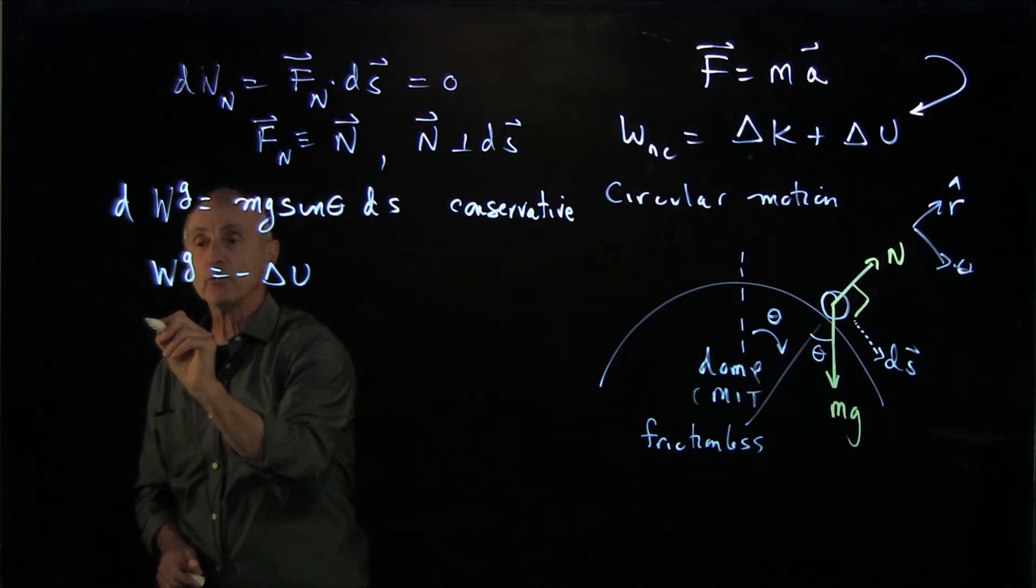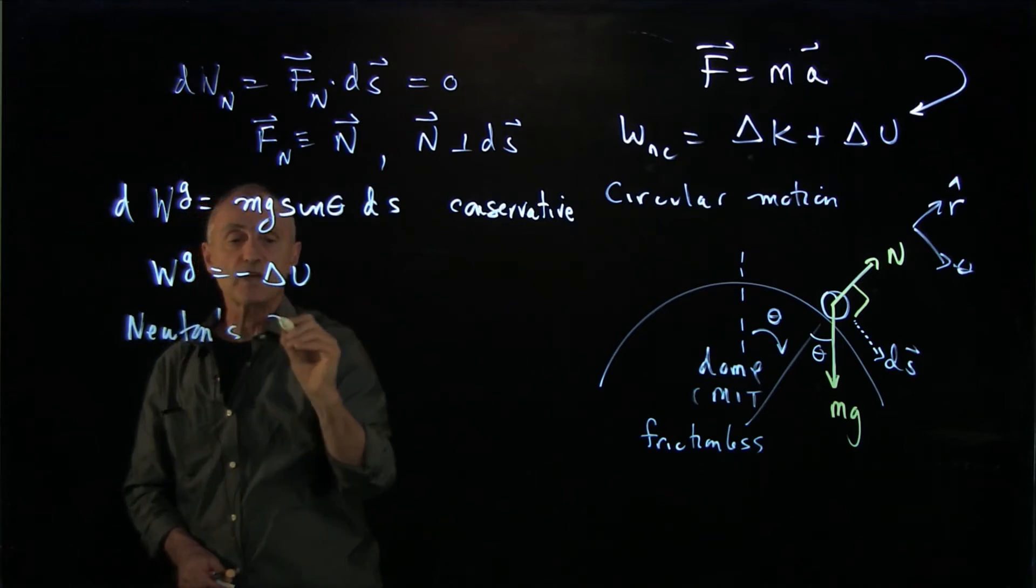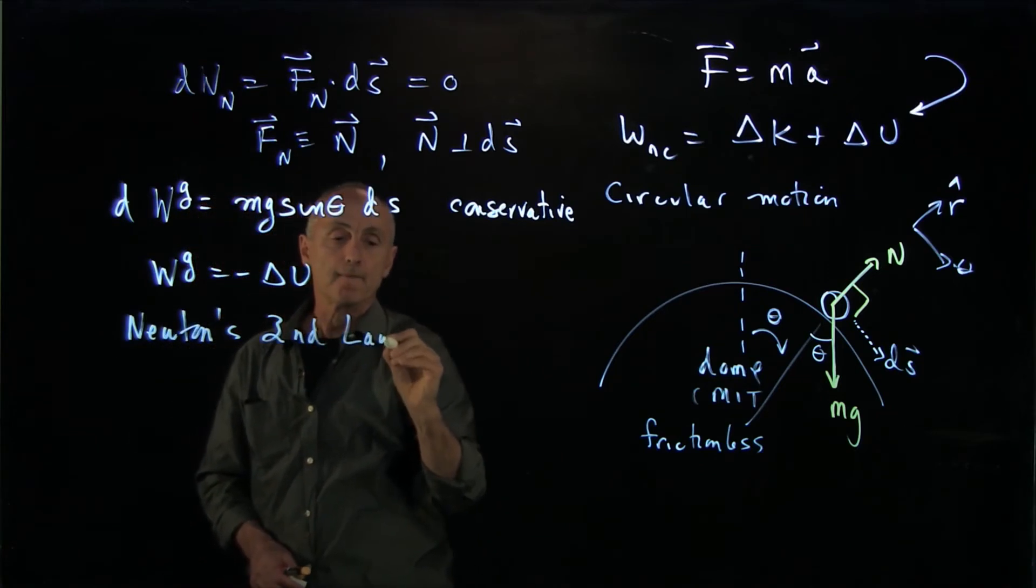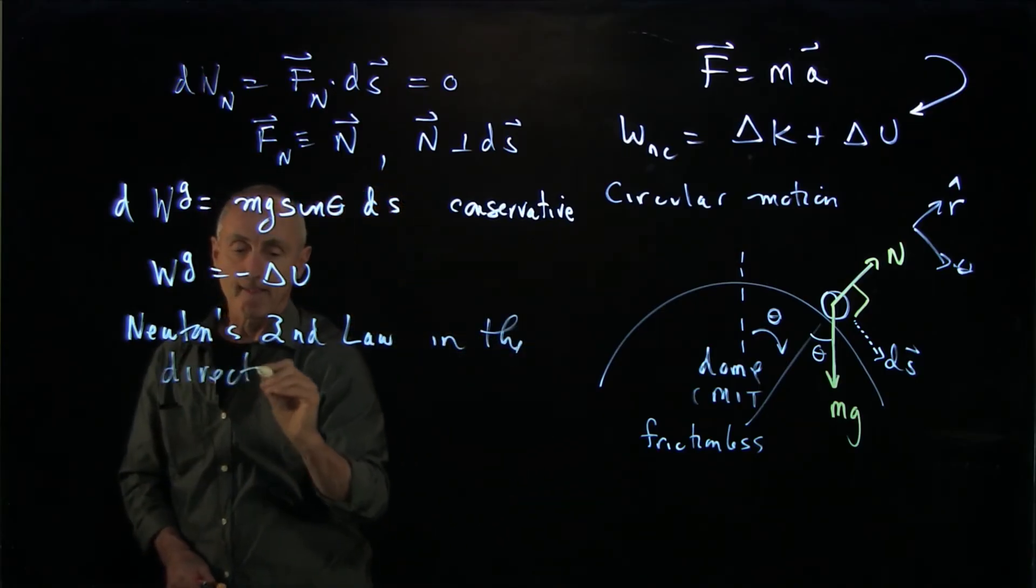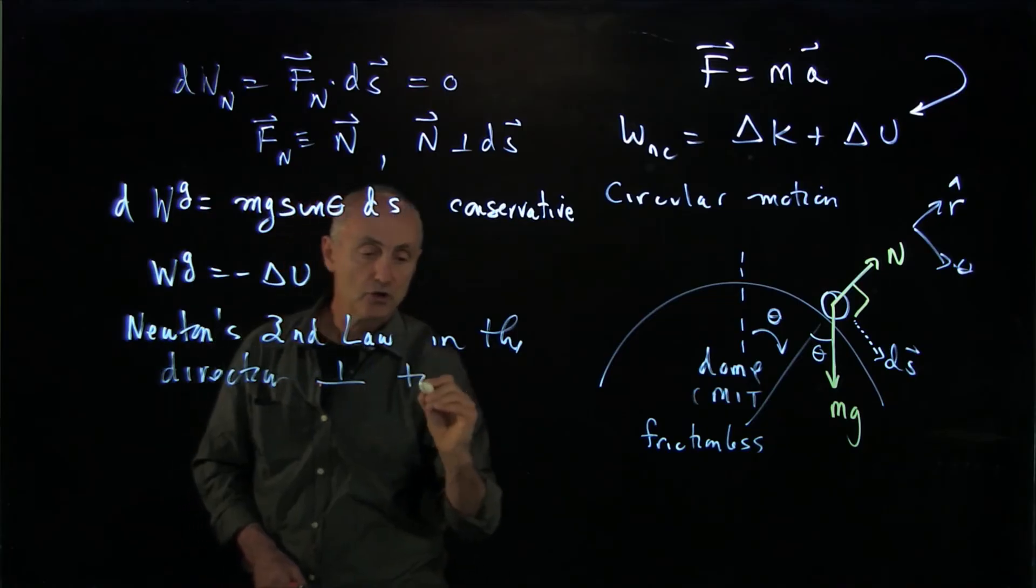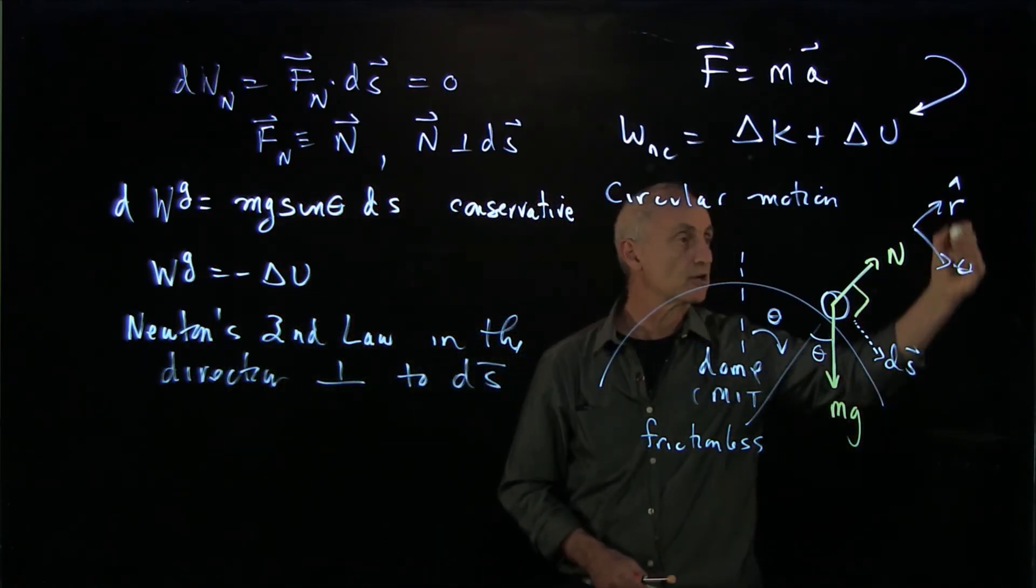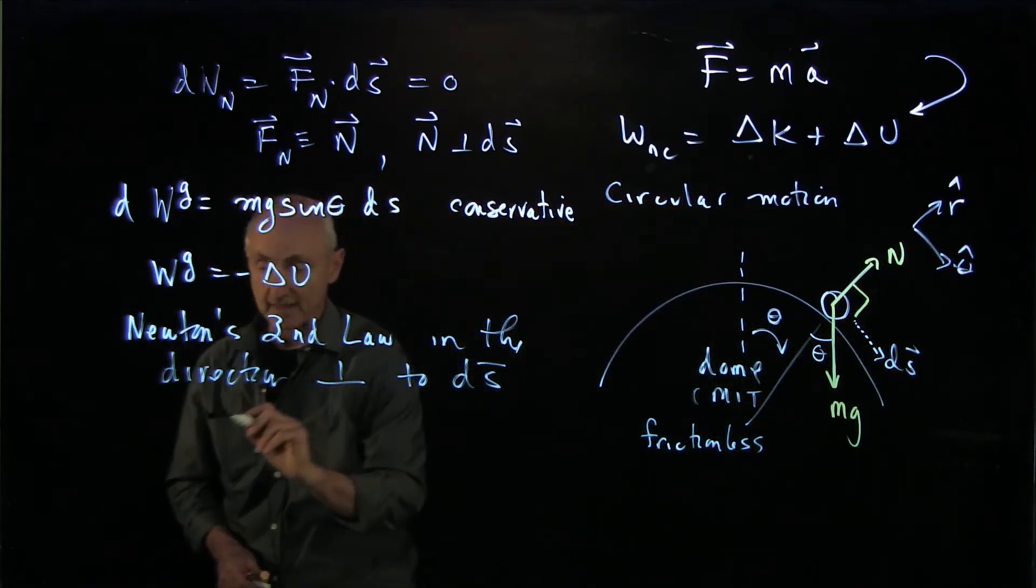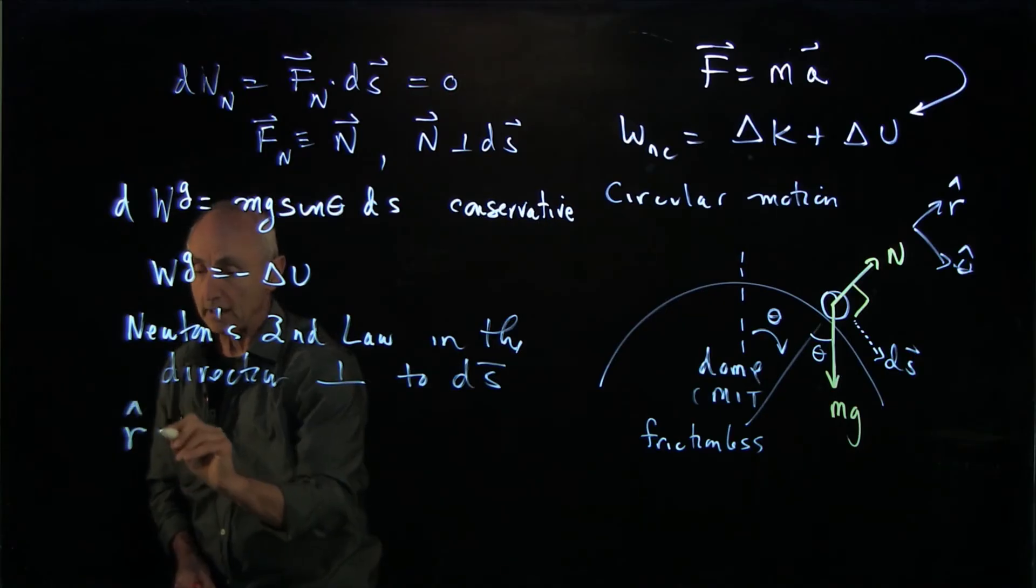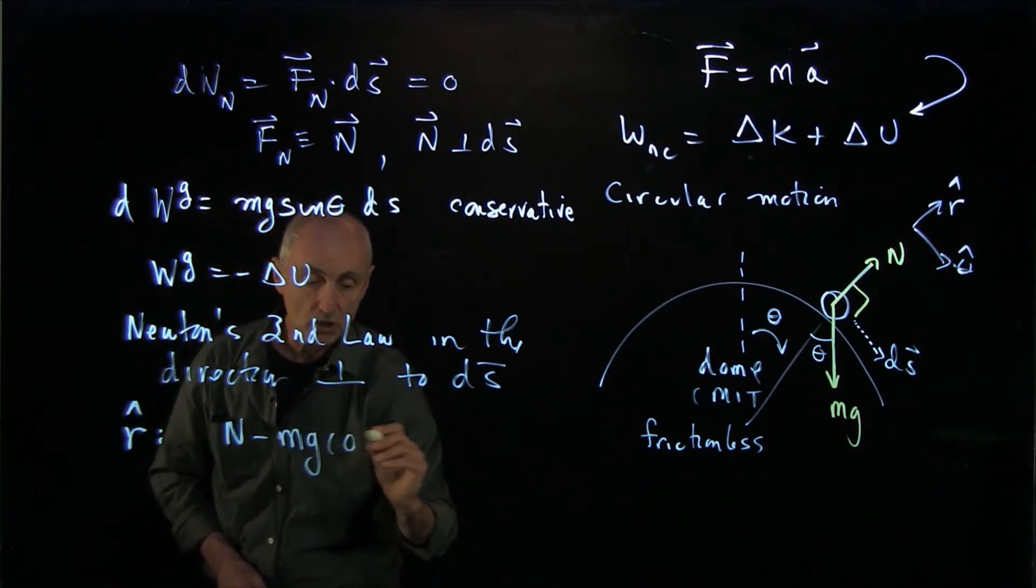So we also need Newton's second law in the direction perpendicular to the displacement. Displacement is in the theta hat direction, so we need Newton's second law in the radial direction. And that we have r hat is we have a normal force minus mg cosine theta.